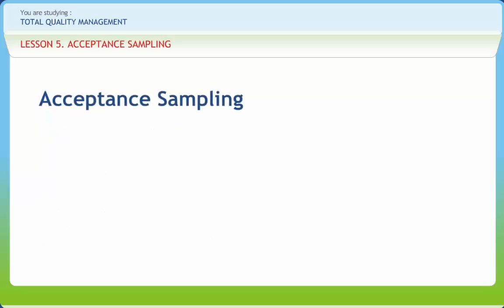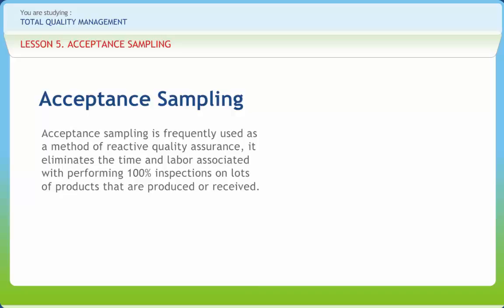Acceptance Sampling is the middle-of-the-road approach between no inspection and 100% inspection. It is a technique where decisions to accept or reject products or services are taken on the basis of sampling inspection. It provides only an indirect means for quality improvement. Acceptance Sampling is frequently used as a method of reactive quality assurance. It eliminates the time and labor associated with performing 100% inspections on lots of products that are produced or received.